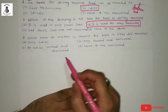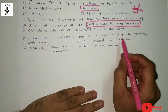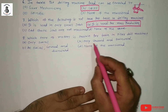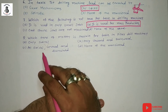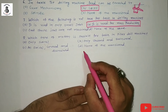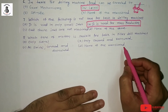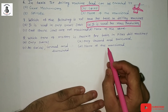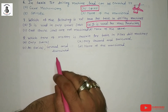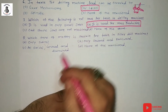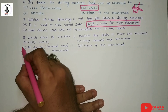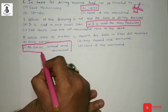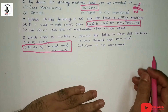Which type of motion is possible for the table in pillar drill machines? Option A: only swivel, option B: only upward and downward, option C: all — swivel, upward and downward, option D: none of the above. Pillar drilling machines feature all kinds of motions — swivel as well as upward and downward movements. So the answer is option C.